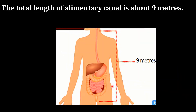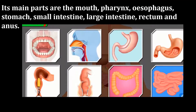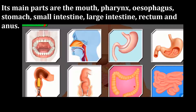The total length of the alimentary canal is about 9 meters. Its main parts are the mouth, pharynx, esophagus, stomach, small intestine, large intestine, rectum, and anus.